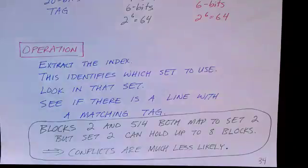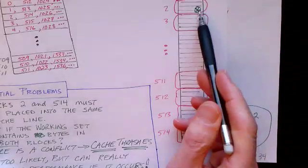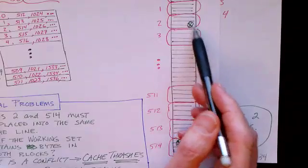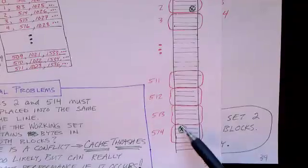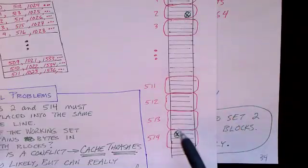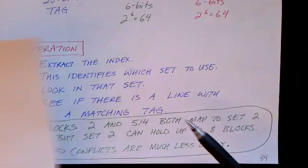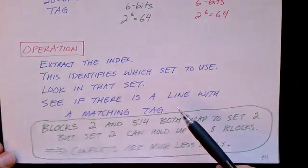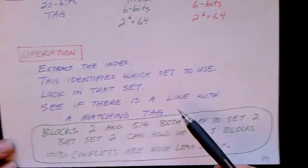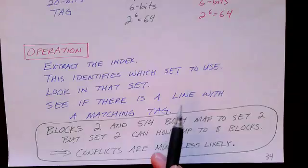Going back to the previous diagram, here is block number two. Here is block 514. There may be some bytes that are in block two that are important and some bytes in block 514 that are in our working set. But both these blocks can be kept in the cache at the same time because we can put each one of them into set number two, and each set can contain up to eight blocks. In this case we're able to avoid that sort of conflict, and this is the sort of design that is used in caches.